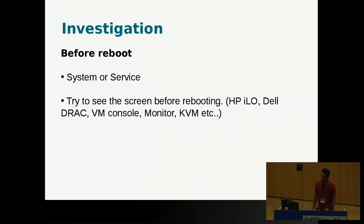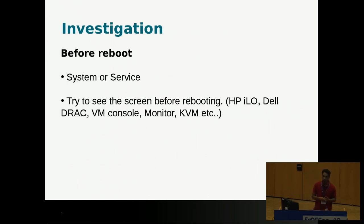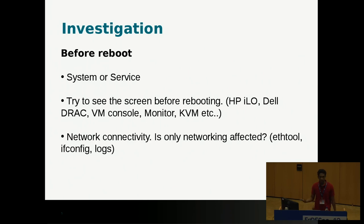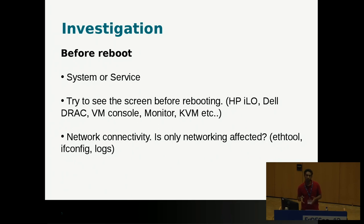Then you check what you see on the screen. If you have any kind of console access you will check it, or if you have a VM you will check the VM console. KVM is the switch used between different monitors in data centers. You check the screen to see what the issue is if possible. For network connectivity, you try to see how the connectivity is — whether the issue is within the system using ethtool, ifconfig, and logs.